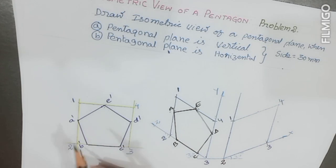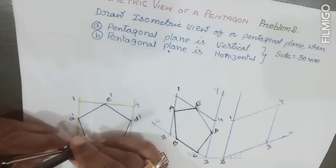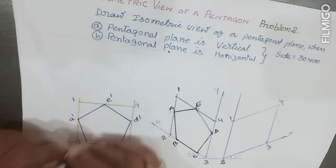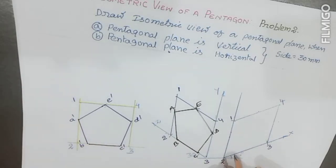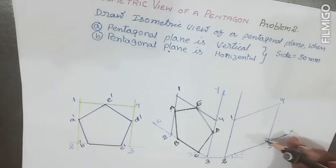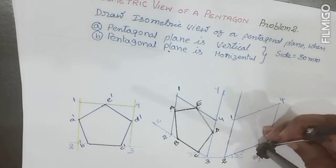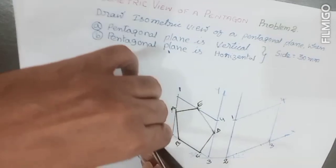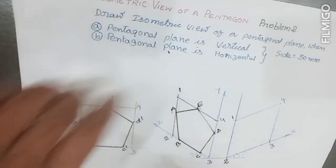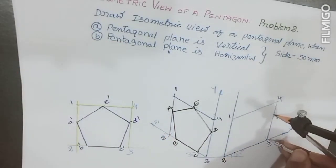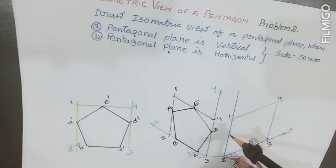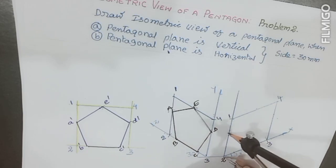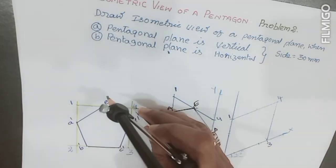Using 2 as center and 2-B as radius, draw an arc. Similarly, using 3 as center with the same radius, draw an arc. Then using 3 as center and 3-D as radius, draw an arc. Similarly, using 2 as center with 2-A as radius, and then using 4 as center with 4-A as radius, locate all pentagon points.